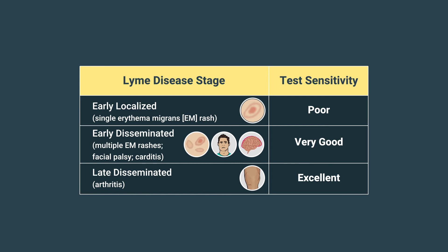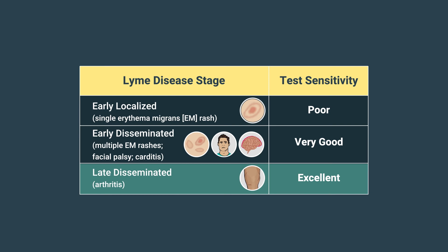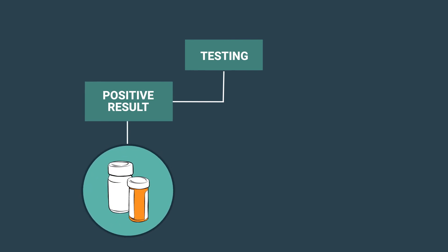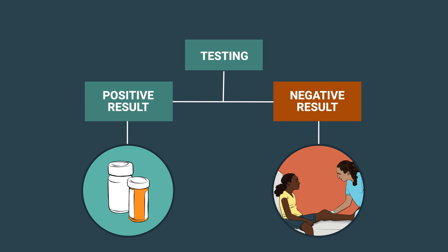Treatment should be prescribed without performing diagnostic testing. The sensitivity of Lyme disease serology is excellent for Lyme arthritis, a manifestation of late-disseminated Lyme disease. Testing could be very helpful in Sophia's case. A positive two-step serologic test for Lyme disease would support a full course of antibiotic treatment for Lyme arthritis. A negative test would suggest an alternate diagnosis and should prompt the clinician to consider additional diagnostic evaluation.